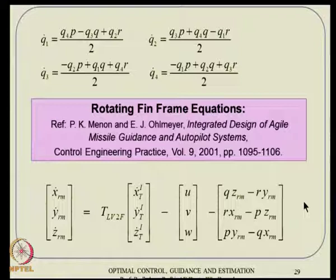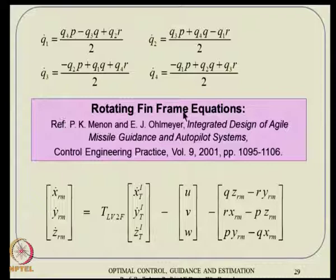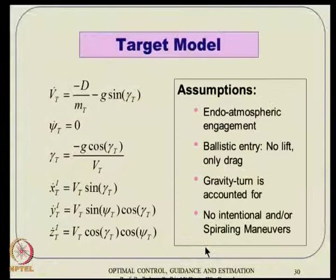These equations comprise 6 dynamic, 4 kinematic, and 3 relative position equations — 13 total — plus the quaternion constraint q1² + q2² + q3² + q4² = 1. That algebraic constraint also acts on the system, giving the complete six-DOF equation for this vehicle. More on the rotating fin frame concept can be found in the referenced paper.